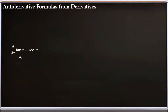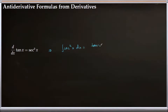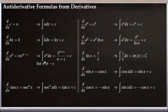The next formula comes from the derivative of tangent x, which equals secant squared of x. So from here we can quickly say the integral of secant squared x dx equals tangent x plus C. These are the antiderivative formulas we just derived.